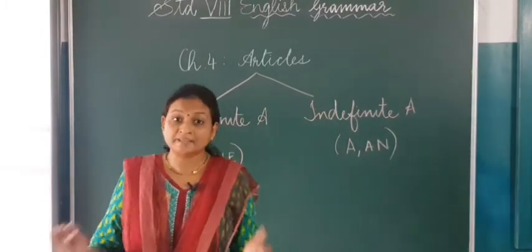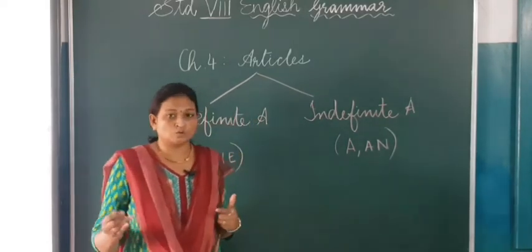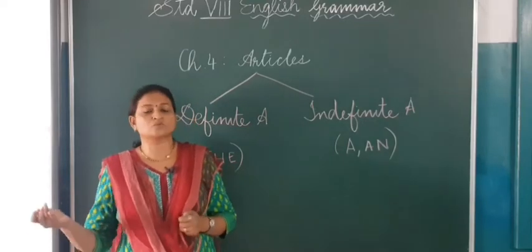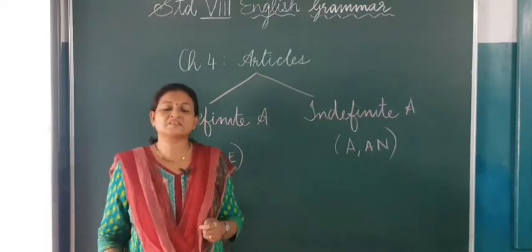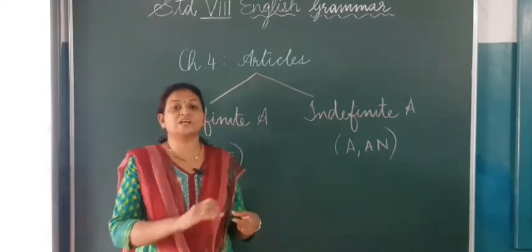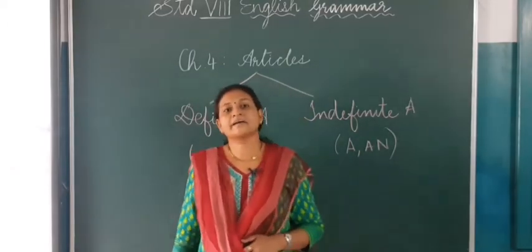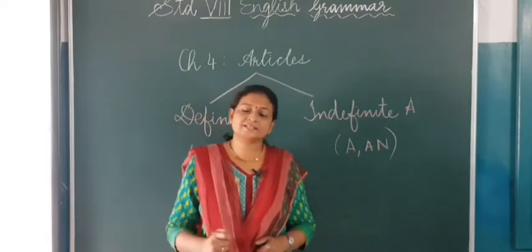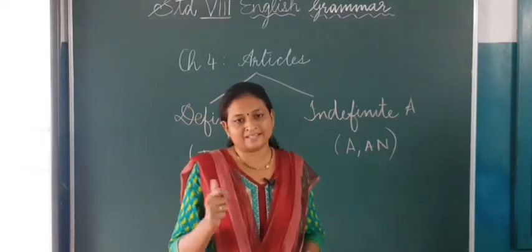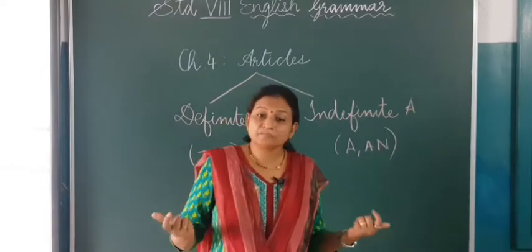Definite is 'the', when we are talking about specific things. Articles always relate to a noun. So when we are talking about a specific noun, it will be 'the'. When we are not sure, then we will be writing 'a' or 'an'. Write the definition with an example — that means one example, but any.